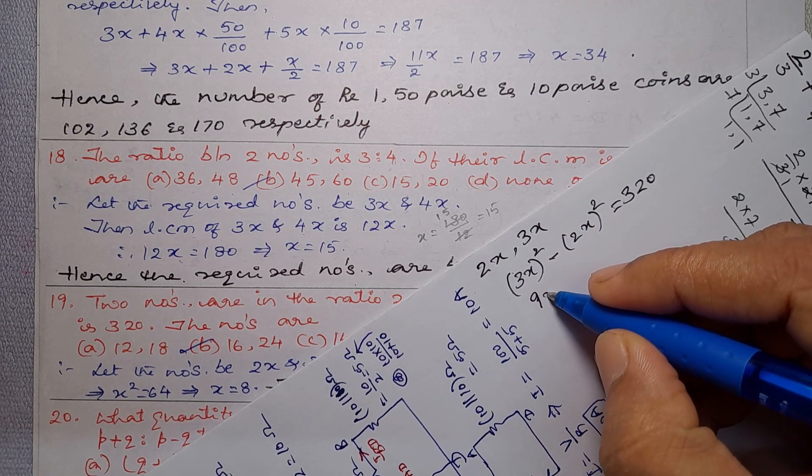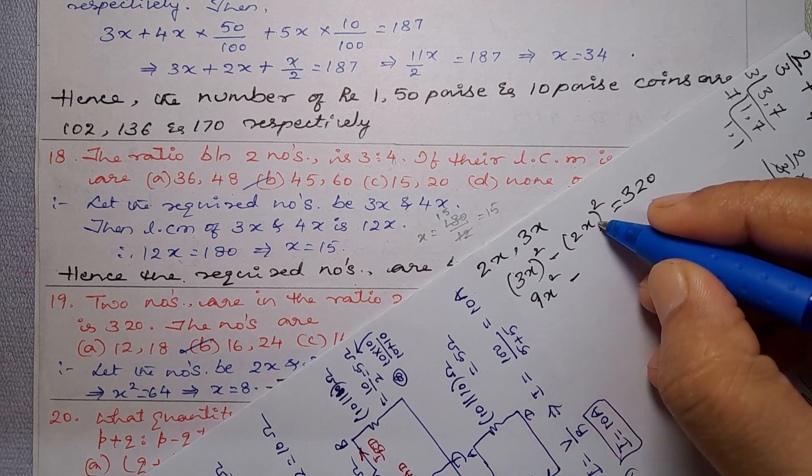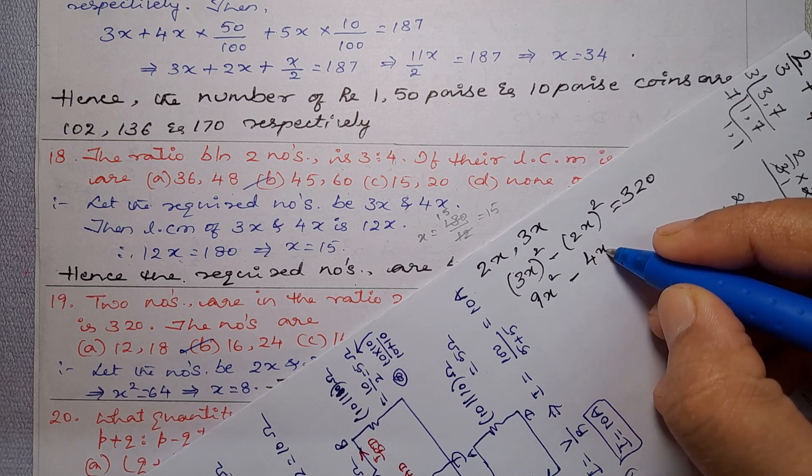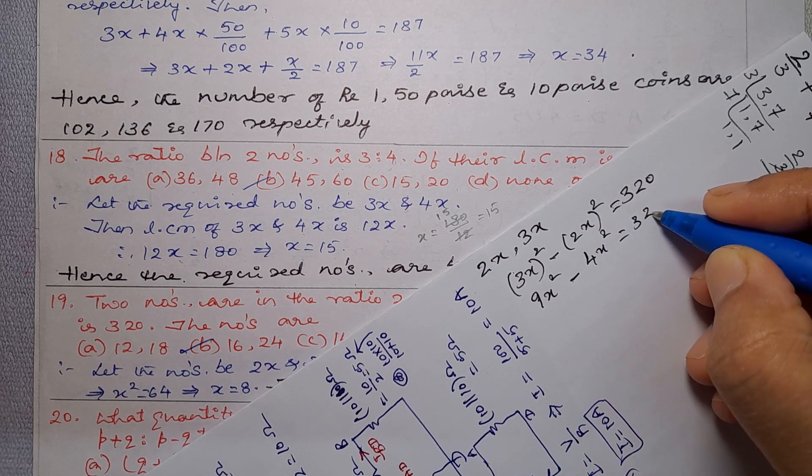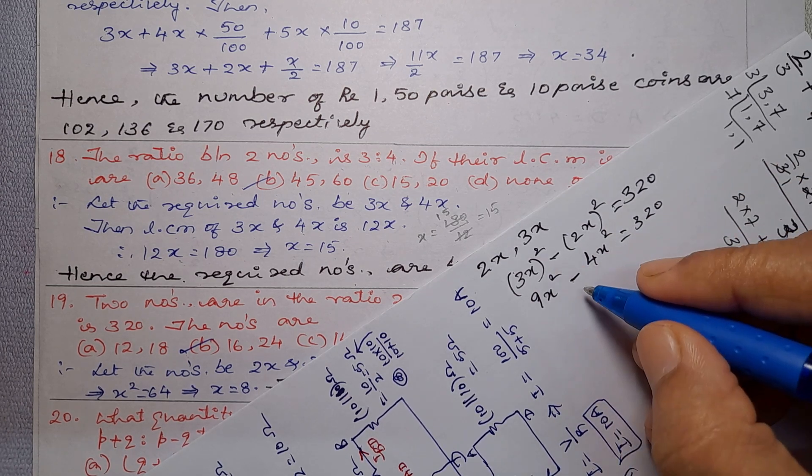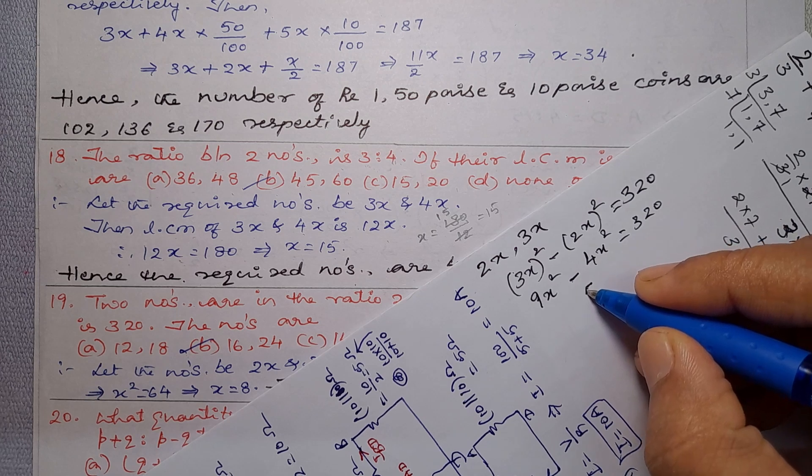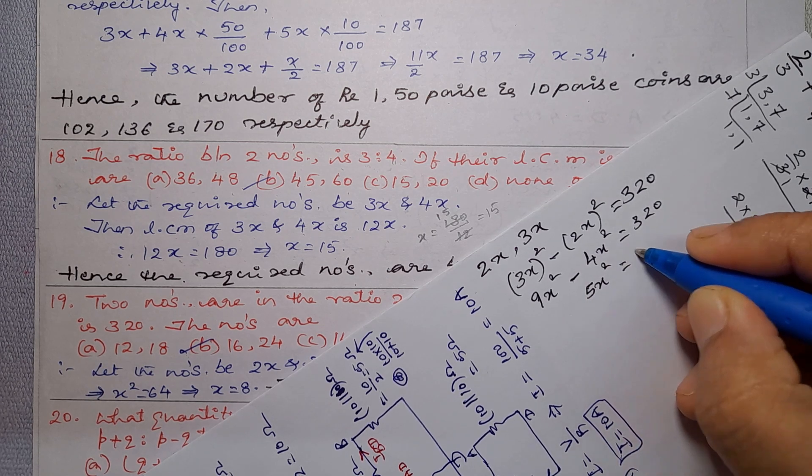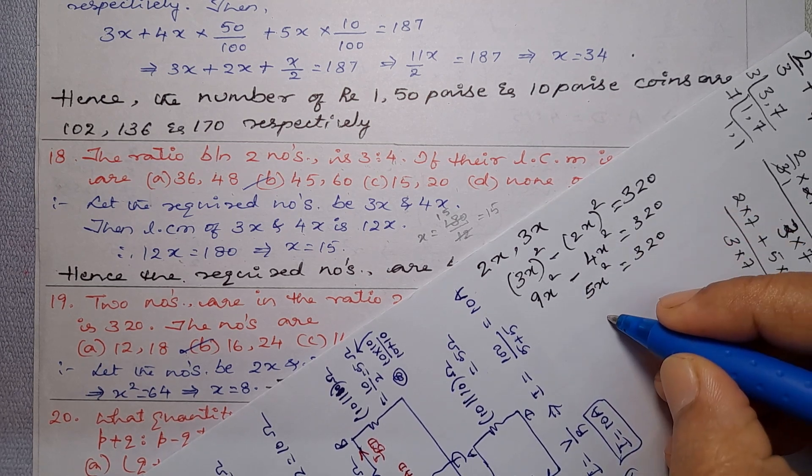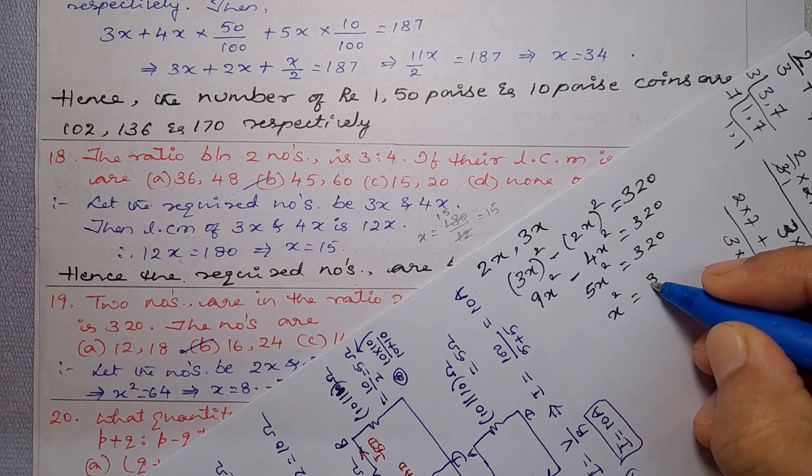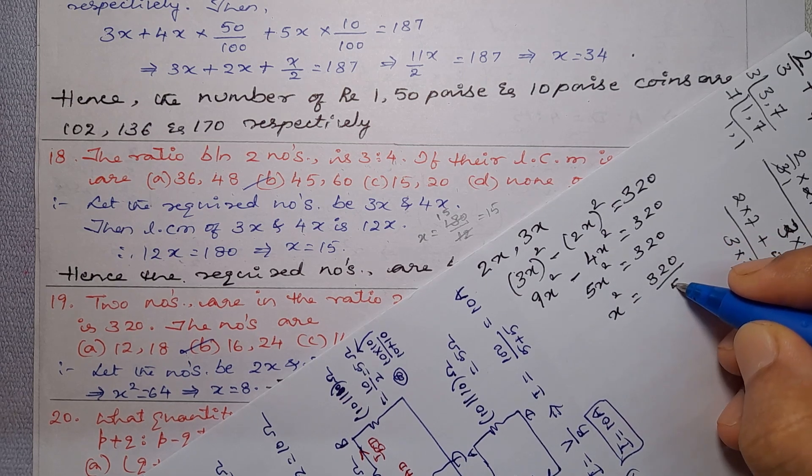So 3x square is 9x square, minus 2x square is 4x square, equal to 320. So 9x square minus 4x square is 5x square equal to 320.